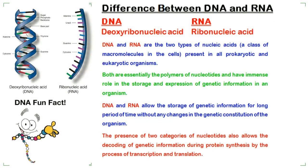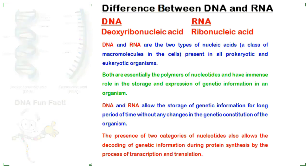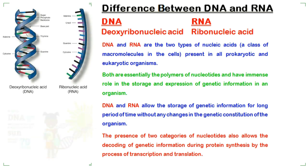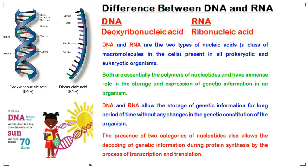DNA and RNA are the two types of nucleic acids, a class of macromolecules in the cells, present in all prokaryotic and eukaryotic organisms. Both are essentially the polymers of nucleotides, and have an immense role in the storage and expression of genetic information in an organism.